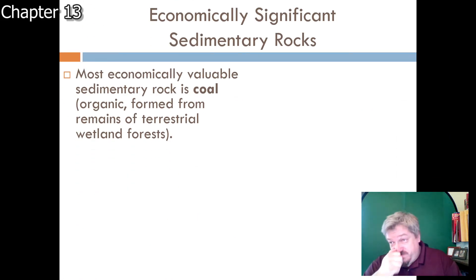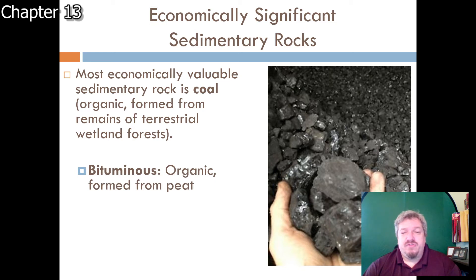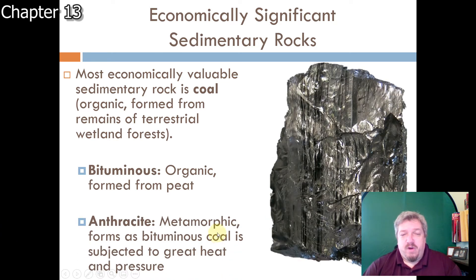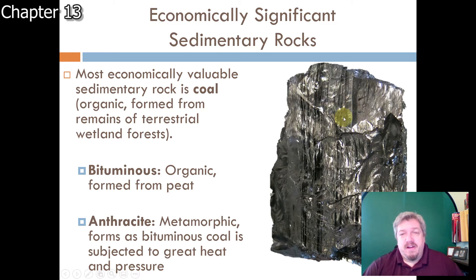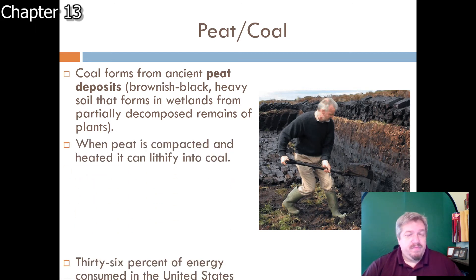Some sedimentary rocks are valuable. Coal is a sedimentary rock formed from the organic remains of forests. Bituminous coal forms from peat and has a dull, dusty brown color. Once bituminous coal undergoes metamorphic change - being buried under the Earth for millions of years - it becomes anthracite, which is more valuable because it burns hotter and releases more energy. Coal forms in bogs and marshes where plant remains get buried, compressed, and turn into this thick dark material that can be burned as fuel.